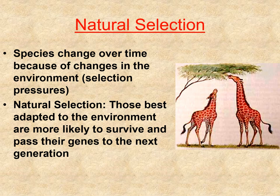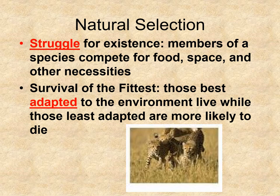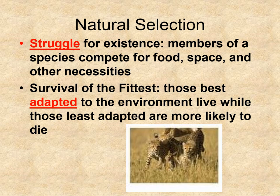In natural selection, Darwin also talks about the struggle for existence — there is going to be competition. Members of a species compete for food, space, and other necessities, which is what we've always heard of as survival of the fittest. Now, 'fittest' doesn't mean you're strong — fittest means do you fit into the environment? Those best adapted are more likely to survive. For example, these leopards have fur color very similar to the environment around them. A bright orange or bright pink creature in this environment would not fit in, would not blend in, and would not survive.